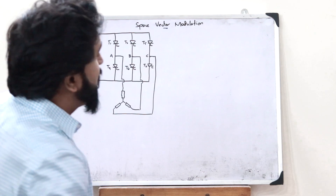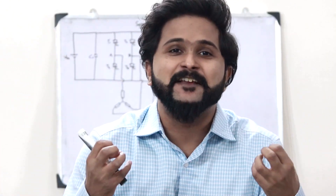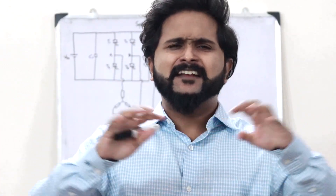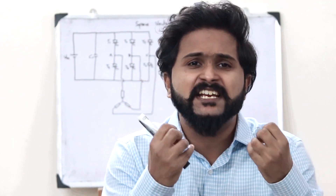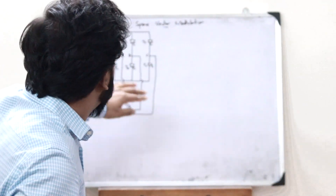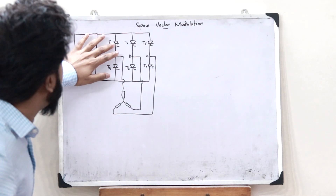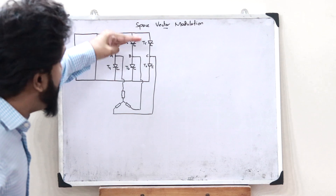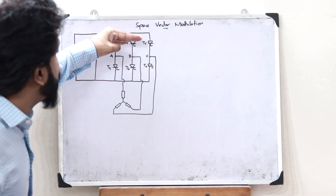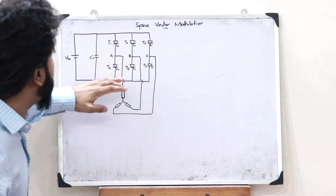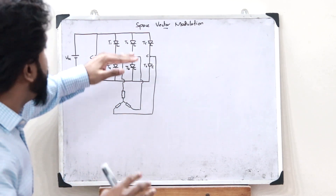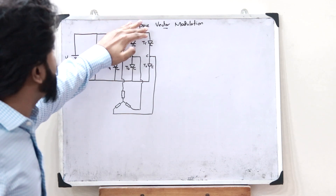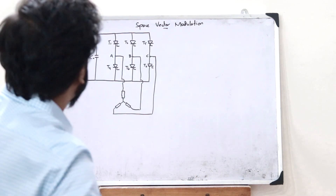Space Vector Modulation is a technique that is used in 3-phase inverters. It is a special technique used for the purpose of switching each of these particular transistors — that is the upper 3 transistors in the case of a 3-phase inverter. That is why we use Space Vector Modulation.